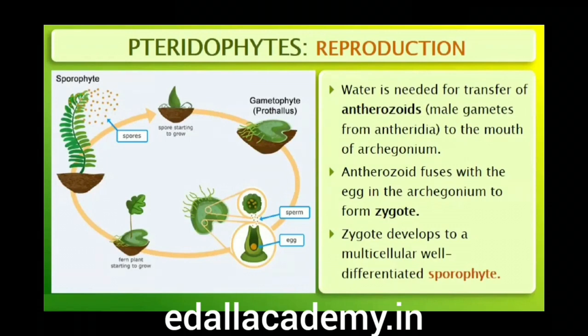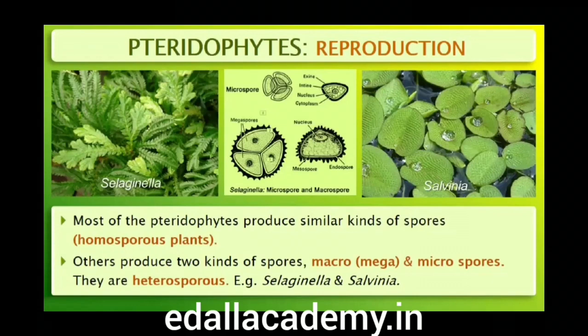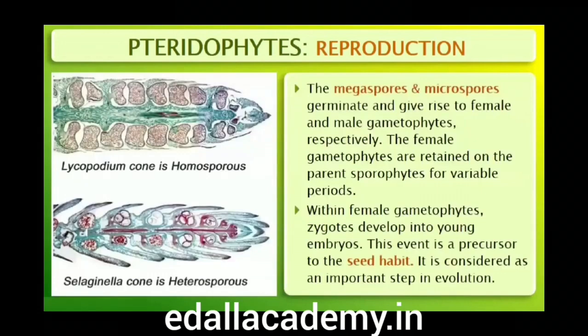Fusion of the male gamete with the egg present in the archegonium results in the formation of a zygote. The zygote thereafter produces a multicellular, well-differentiated sporophyte, which is the dominant phase of the pteridophytes. In the majority of pteridophytes, all spores are of similar kinds — such plants are called homosporous. Selaginella and Salvinia, which produce two kinds of spores — macro (large) and micro (small) — are known as heterosporous.